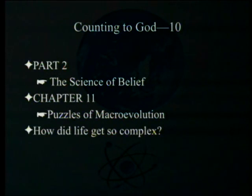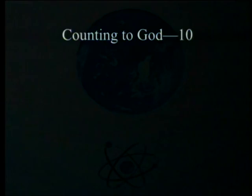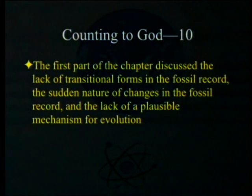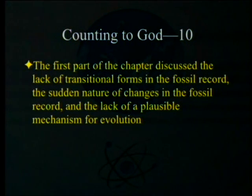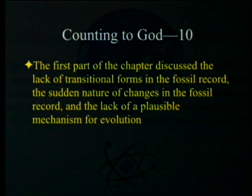The chapter asks the question: how did life get so complex? The first part of the chapter — the stuff in yellow is mine, not his — discussed the lack of transitional forms in the fossil record, the sudden nature of changes in the fossil record, and the lack of a plausible mechanism for evolution.